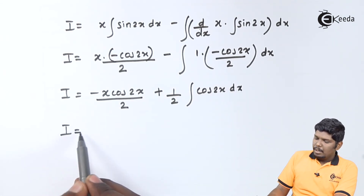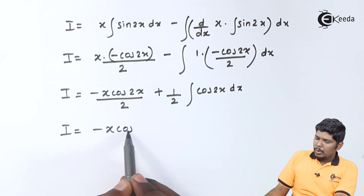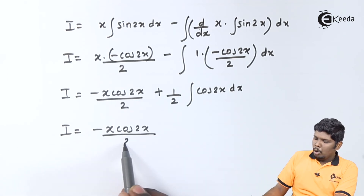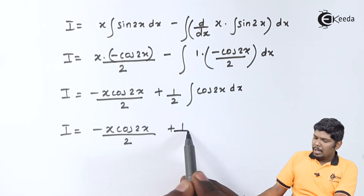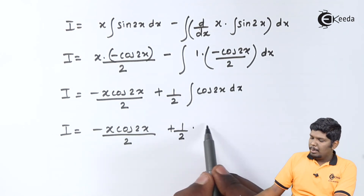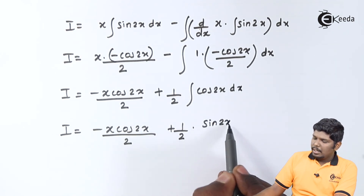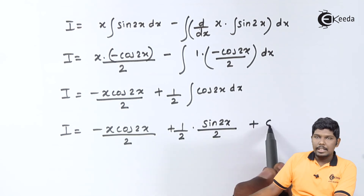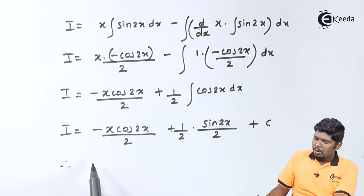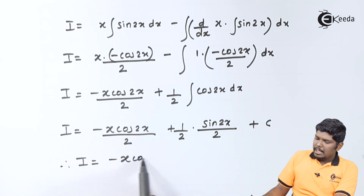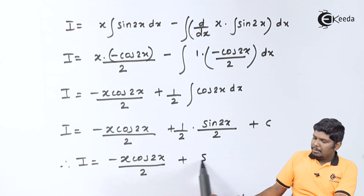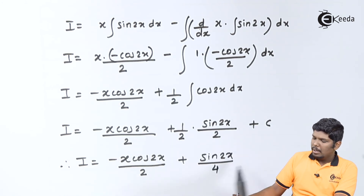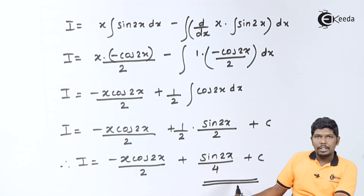In the last step, integral of cos2x is sin2x divided by the derivative of 2x, that is 2. Therefore, I equals minus x·cos2x upon 2, plus 1 upon 2 times sin2x upon 2, plus c — giving us minus x·cos2x upon 2 plus sin2x upon 4, plus c. This is our final answer.